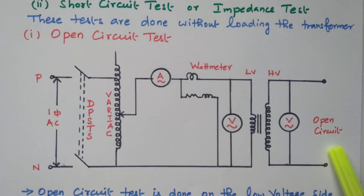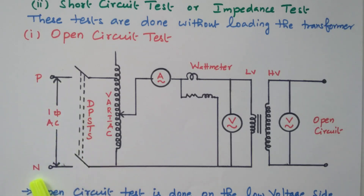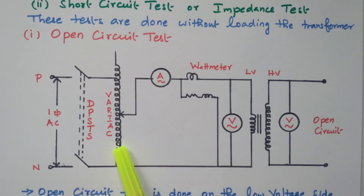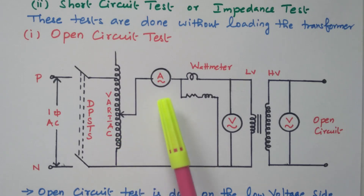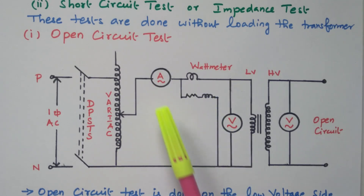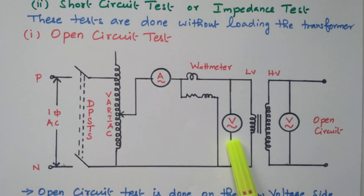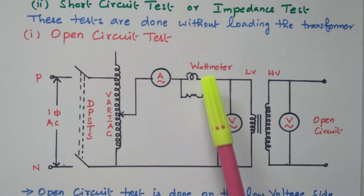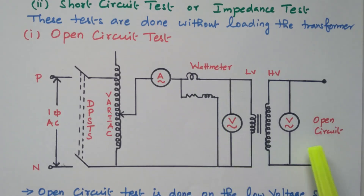All tests are performed on the low voltage winding in the open circuit test; the high voltage winding is kept open. A single phase supply — phase and neutral — is connected through a DPST switch. A variac is available to vary the input voltage given to the transformer; the variac is nothing but an auto transformer. Here we have an ammeter, wattmeter, and voltmeter. One more voltmeter is connected on the output side.